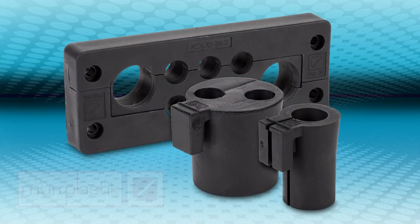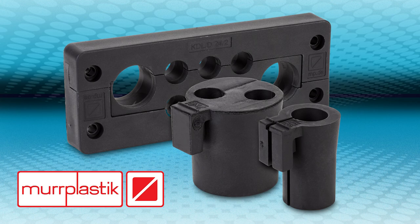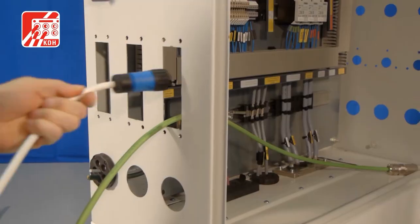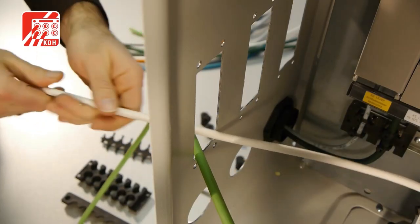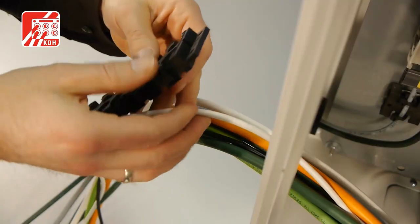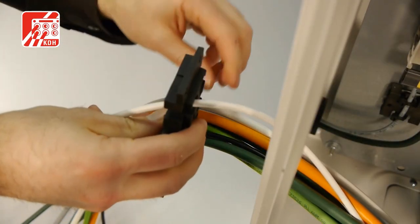Monday Minute at AutomationDirect. The KDLD cable entry system for Murrplastik allows cables to be installed through enclosures or other bulkhead surfaces with the added benefit that pre-made terminated cables can be installed without disassembling the connectors.